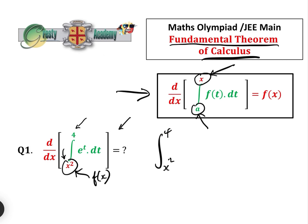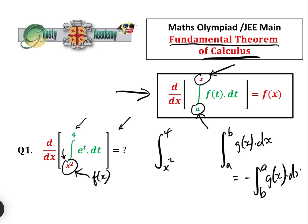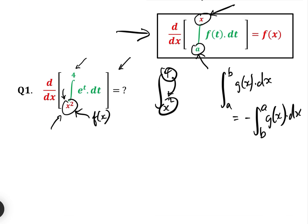The way you flip a definite integral is: the integral from b to a of g(x) dx equals minus the integral from a to b of g(x) dx. So all we need to do to flip the limits from x² to 4 is put a minus sign in front. That gives us d/dx of minus the integral from x² to 4, which becomes minus the integral from 4 to x² of e^t dt.